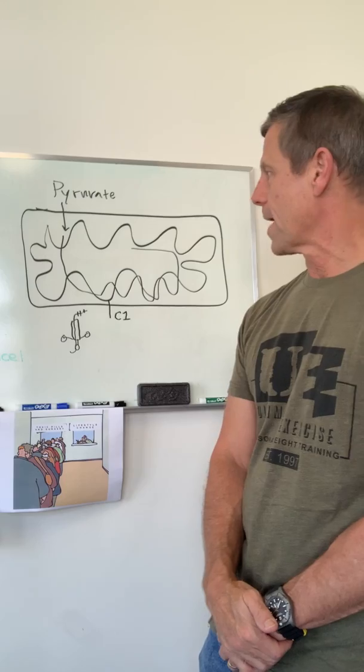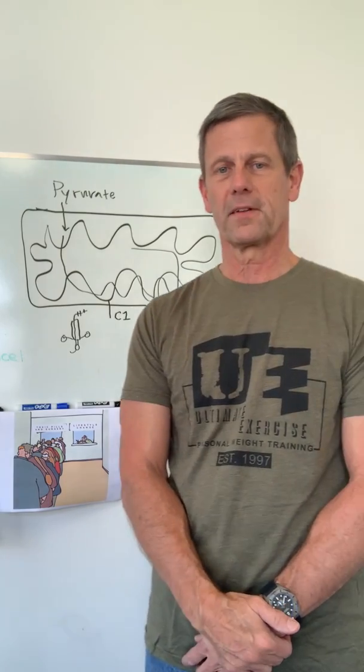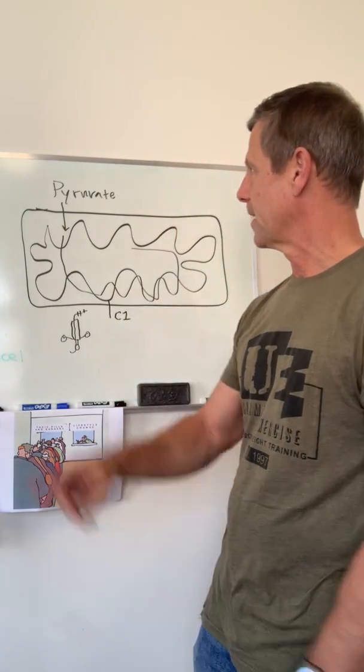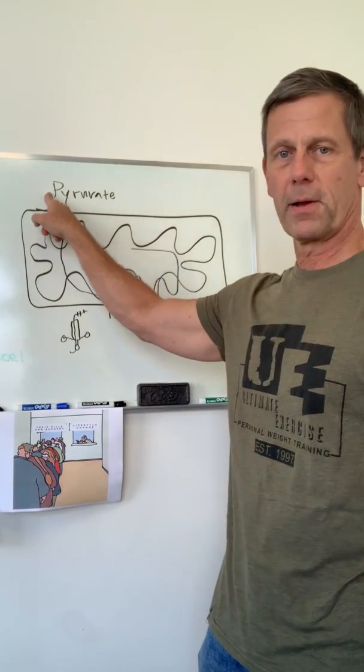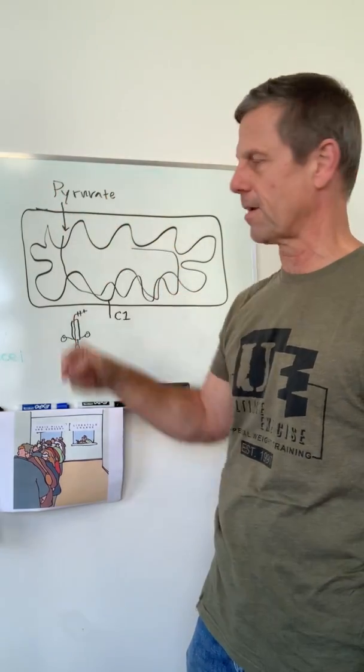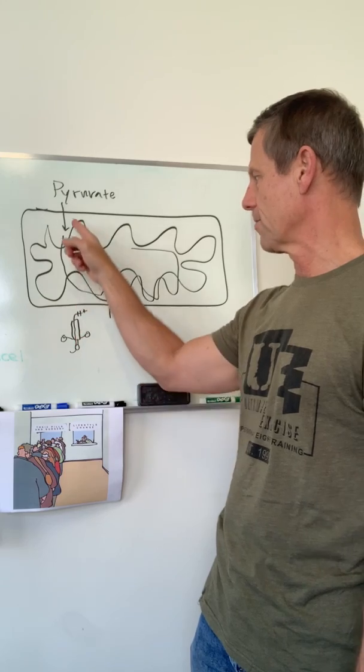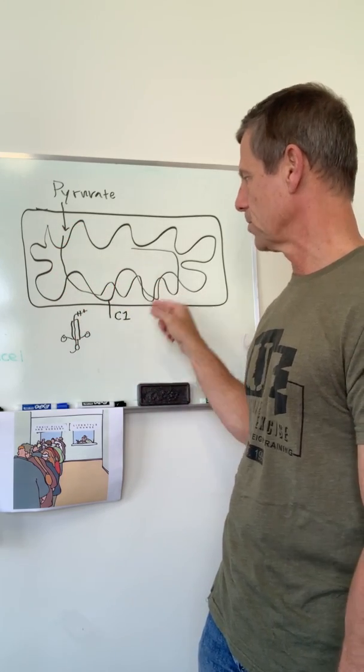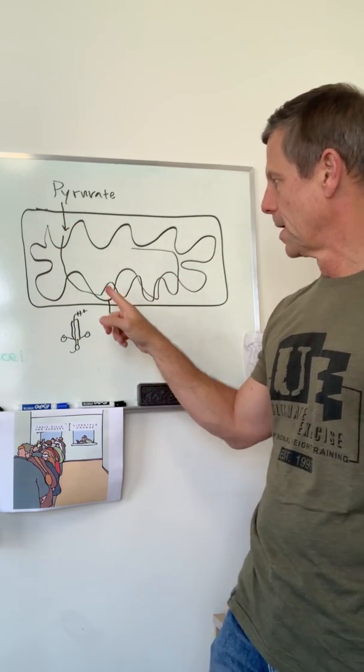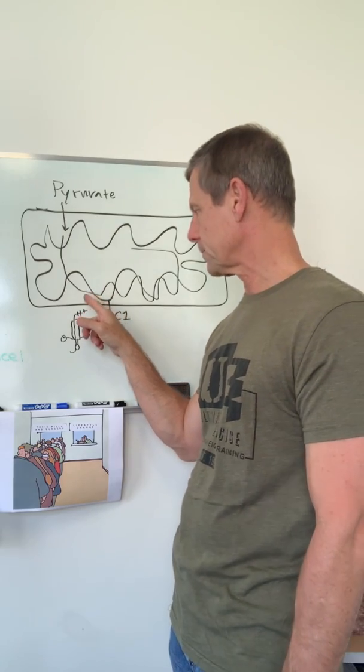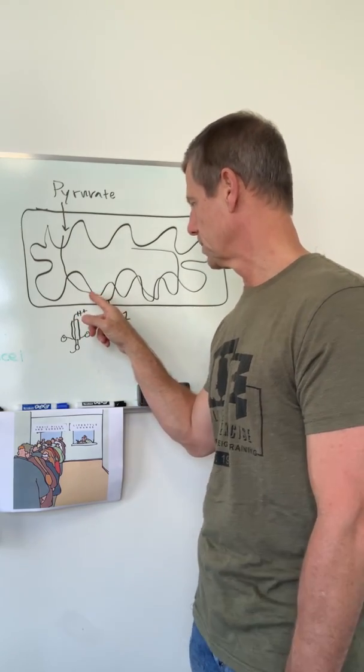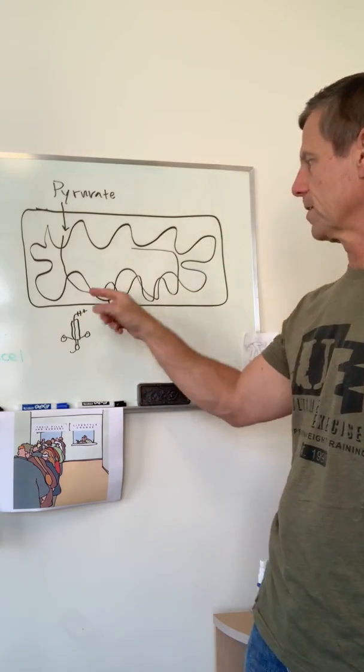Now, for quick review, the mitochondria is the powerhouse inside the cell. It takes the substrate from anaerobic glycolysis in the cytosol of the cell. That gets pumped into the mitochondria, and it goes through multiple chemical reactions, delivering energy to the electron transport chain.